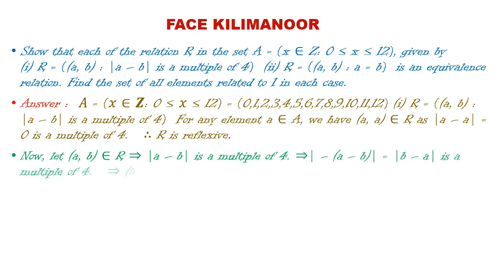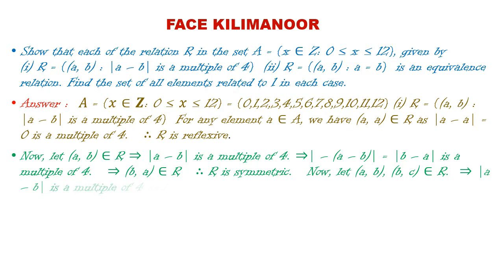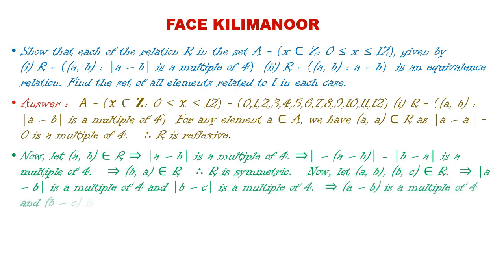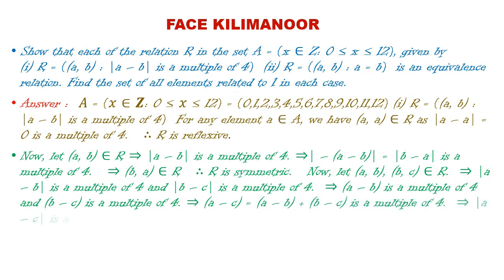For symmetry: if (a,b) belongs to R, then |a−b| is a multiple of 4. Since |b−a| = |a−b|, it is also a multiple of 4, so (b,a) belongs to R. Therefore R is symmetric. For transitivity: if (a,b) and (b,c) belong to R, then |a−b| and |b−c| are both multiples of 4.